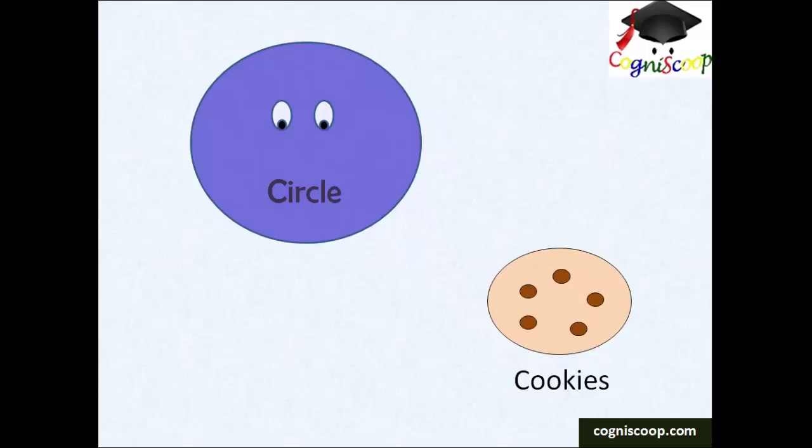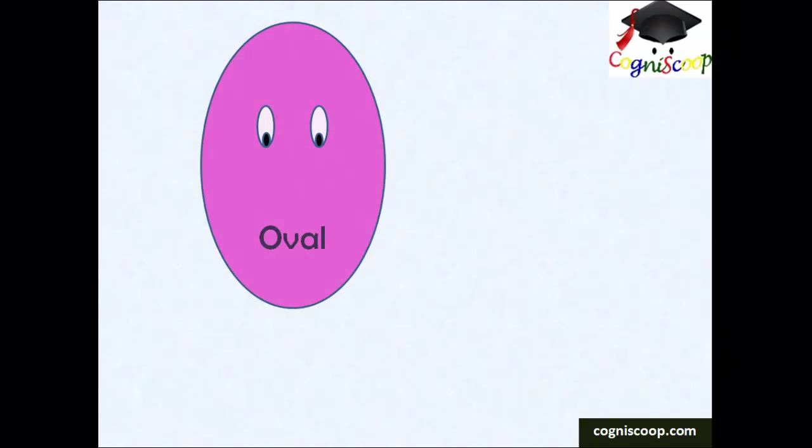Oval has curved surface but not round. The curve is not equidistant from the center. An egg is an example of an oval shape.